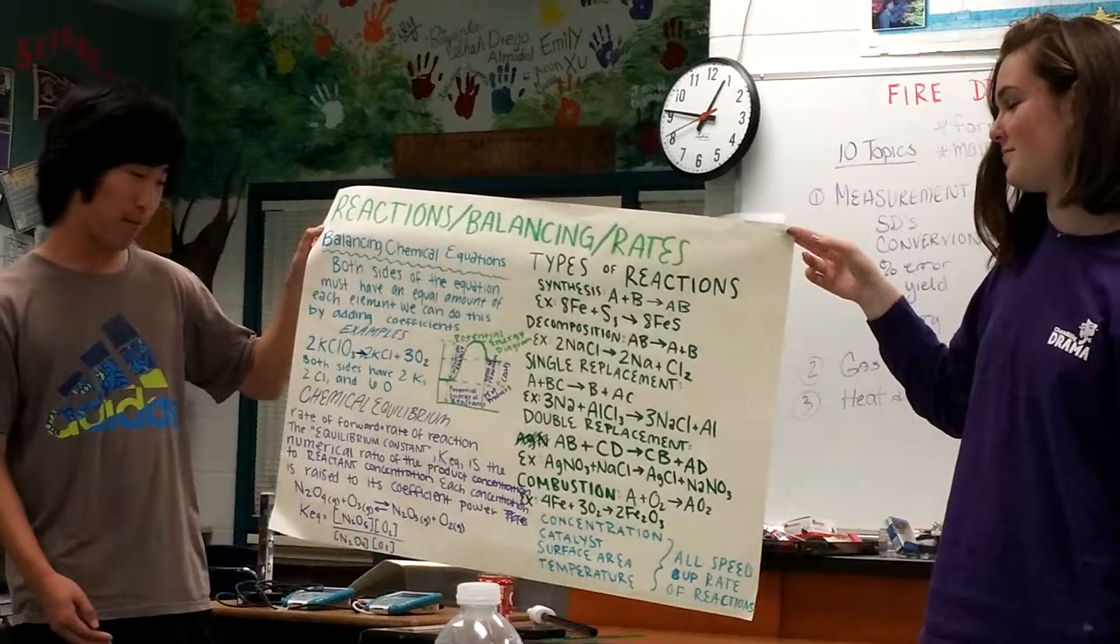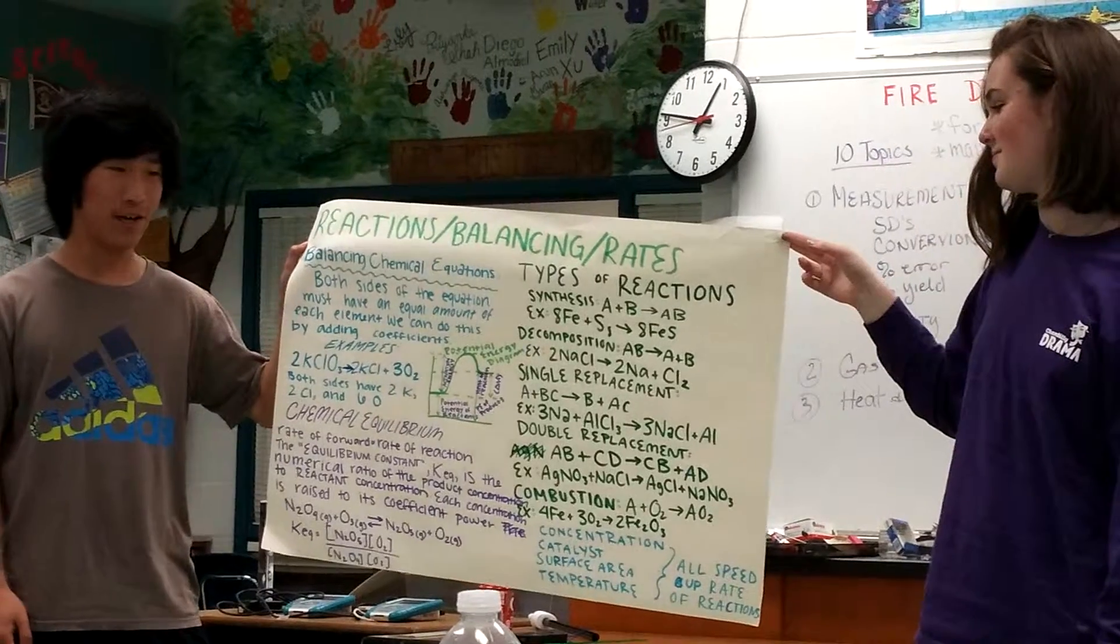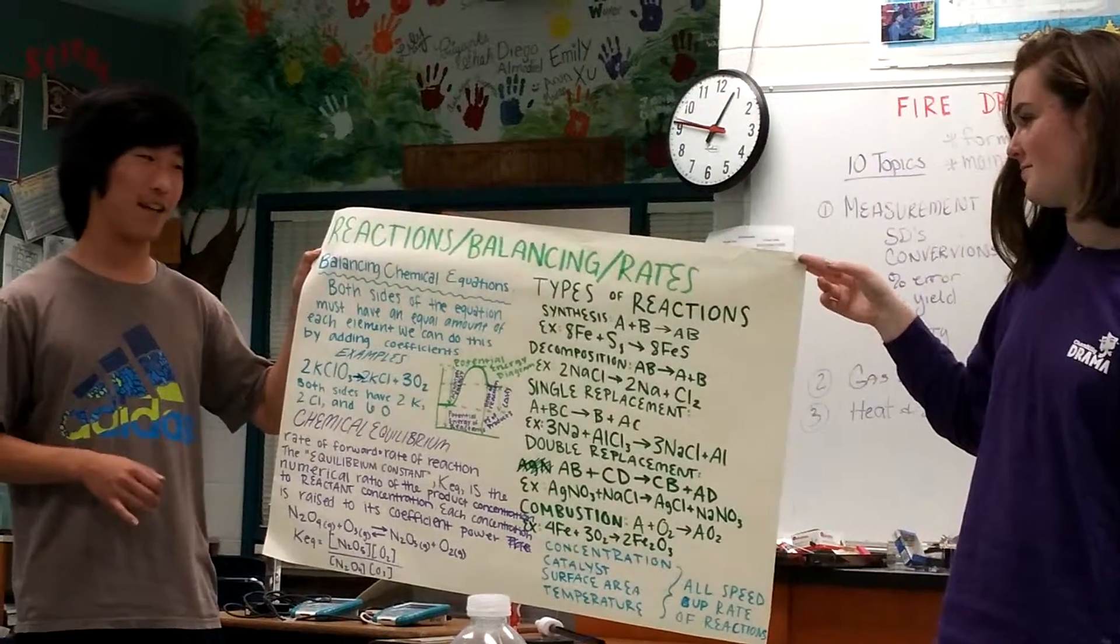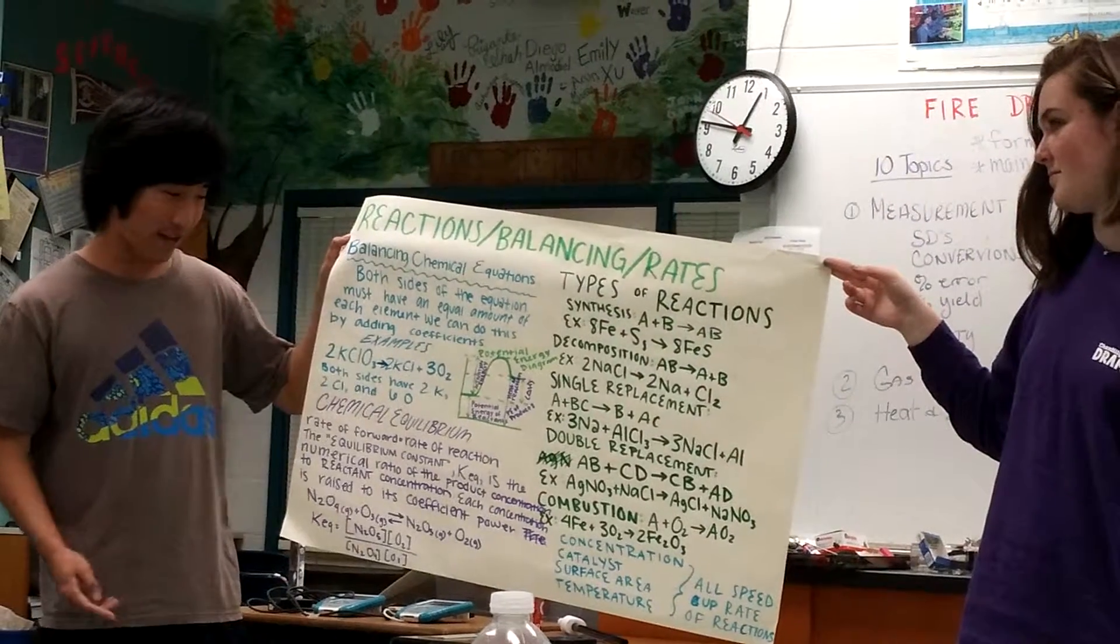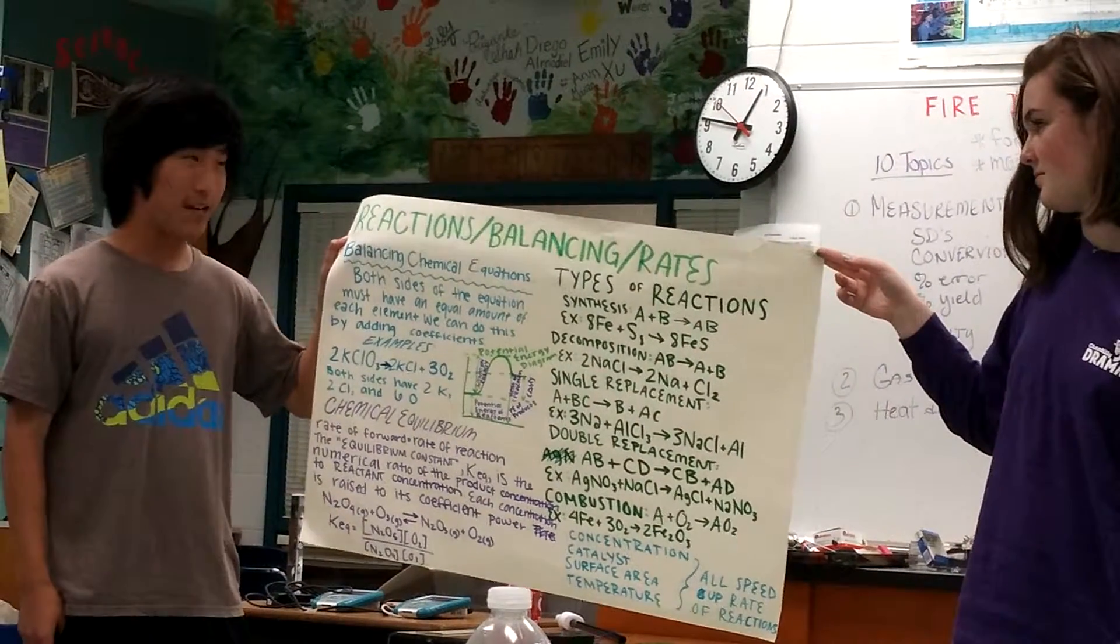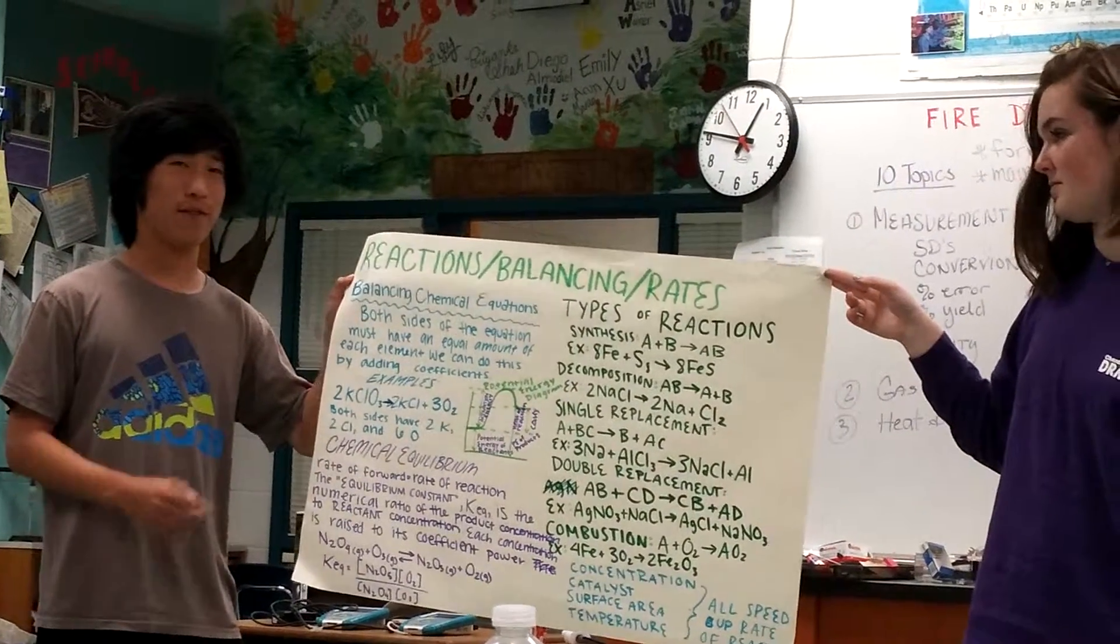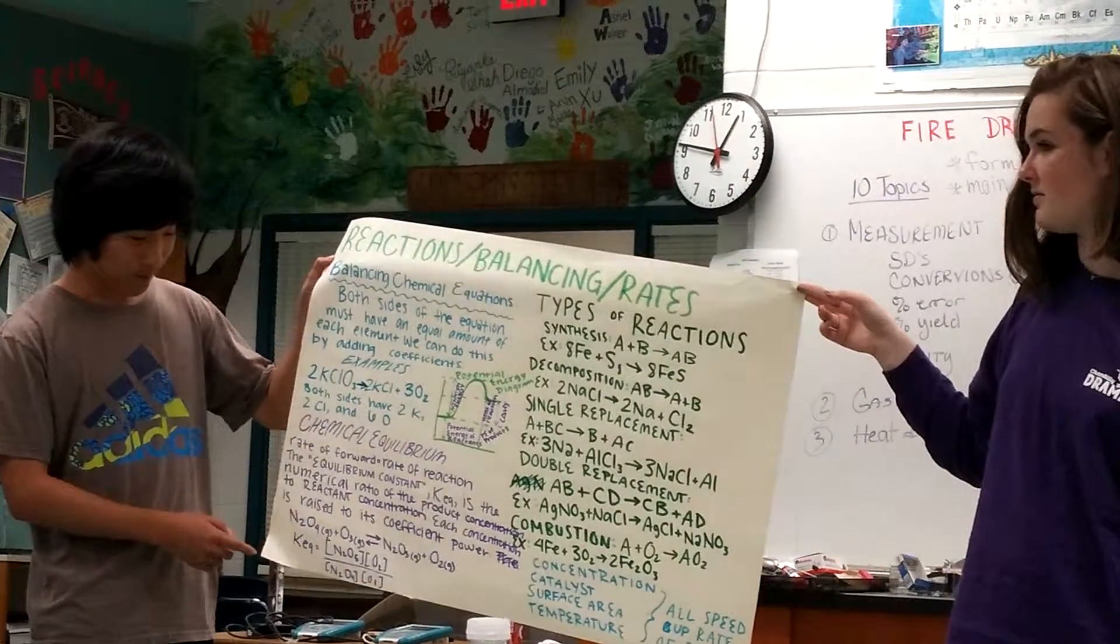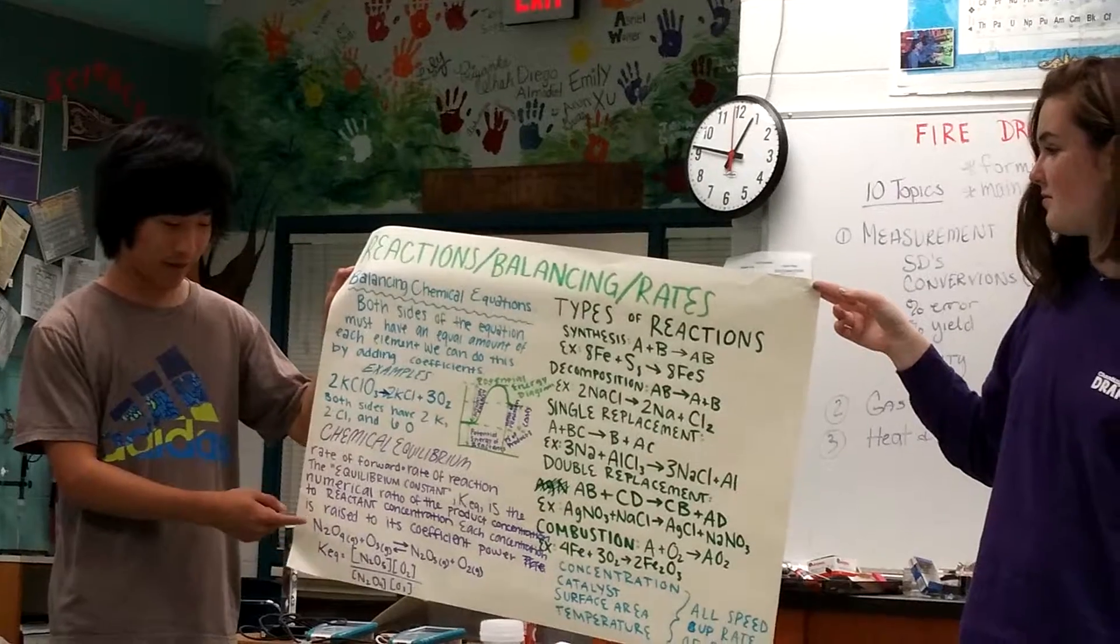So the equilibrium constant is a ratio of the product concentration to the reactive concentration. So to find the constant, you raise each concentration to the power of its coefficient. And so in this example, none of them are raised to a power because none of them have a coefficient.